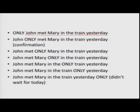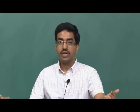Sentence 1: 'Only John met Mary in the train yesterday' — here 'only' modifies 'John', meaning nobody else met Mary. Sentence 2: 'John only met Mary in the train yesterday' — you are confirming that John did meet Mary. Sentence 3: 'John met only Mary in the train yesterday' — 'only' modifies 'Mary', so John met only one person.